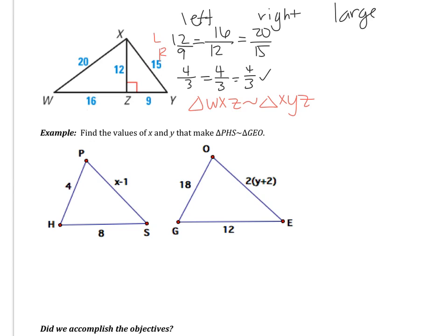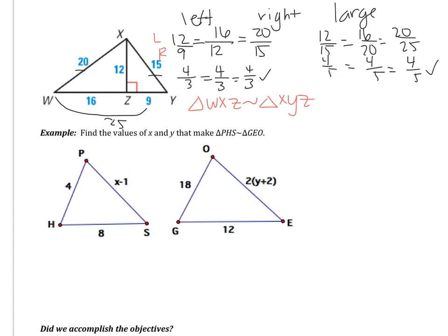Now I'll compare the left triangle to the large triangle. The left triangle still has sides of 12, 16, and 20. The large triangle has sides 15, 20, and 25, so smallest is 15, medium is 20, and largest is 25. Simplifying the ratios: 12 over 15 divides by 3 to give 4 over 5; 16 over 20 divides by 4 to give 4 over 5; 20 over 25 divides by 5 to give 4 over 5. These triangles are also similar, so the left is similar to both the right and the large triangle — all three triangles are similar.